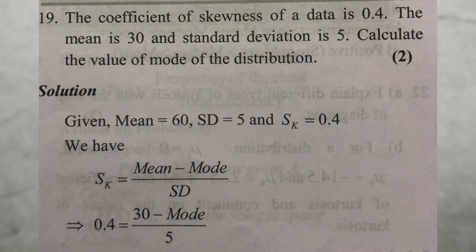The coefficient of skewness of a data is 0.4. The mean is 30, and the standard deviation is 5. Calculate the value of the mode of the distribution. The coefficient of skewness formula is equal to mean minus mode, divided by standard deviation.